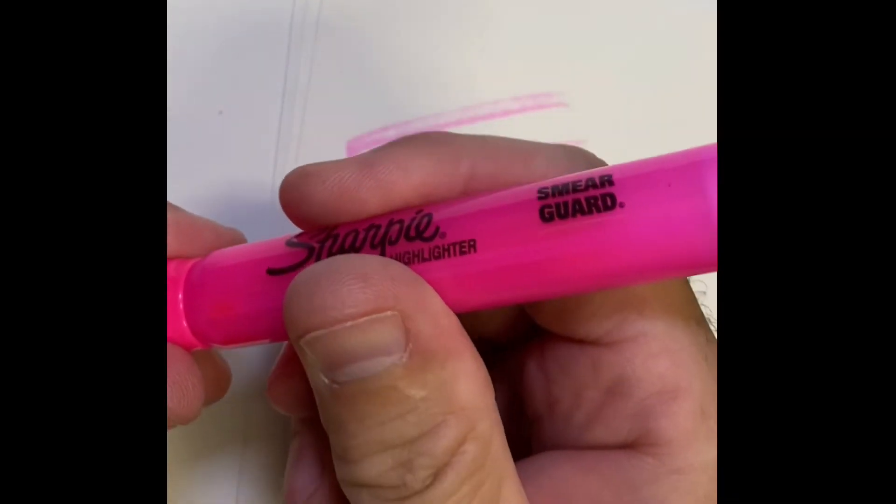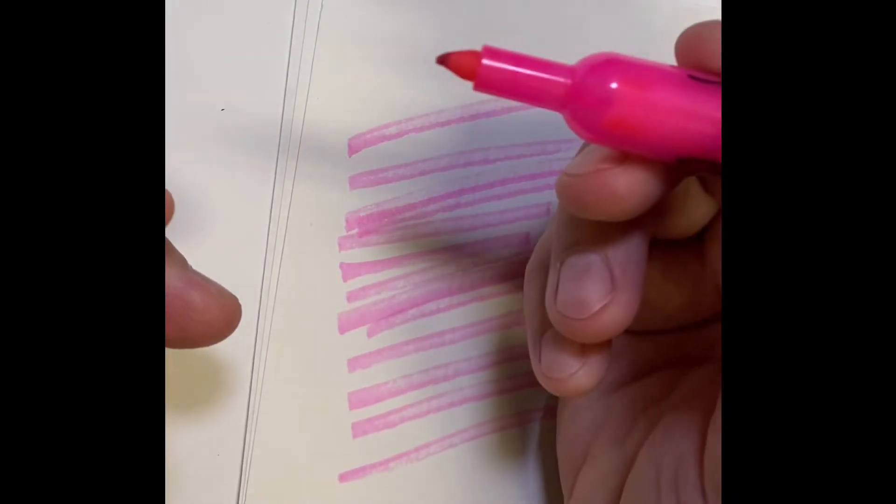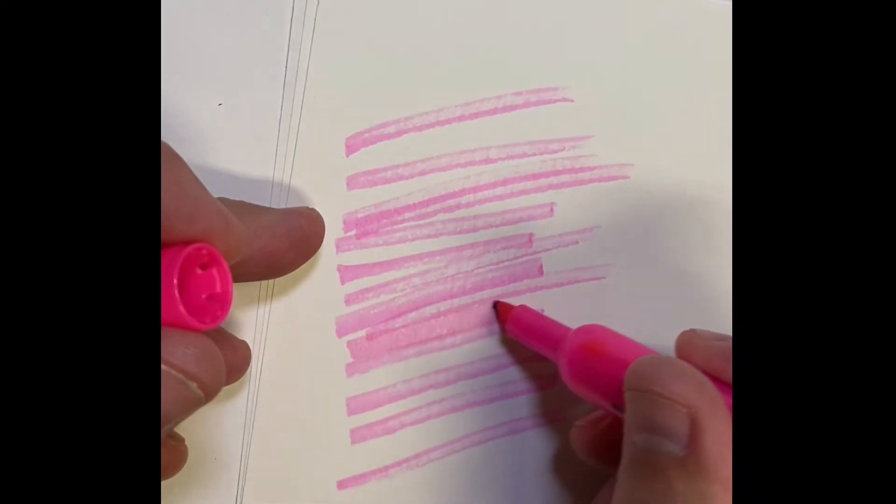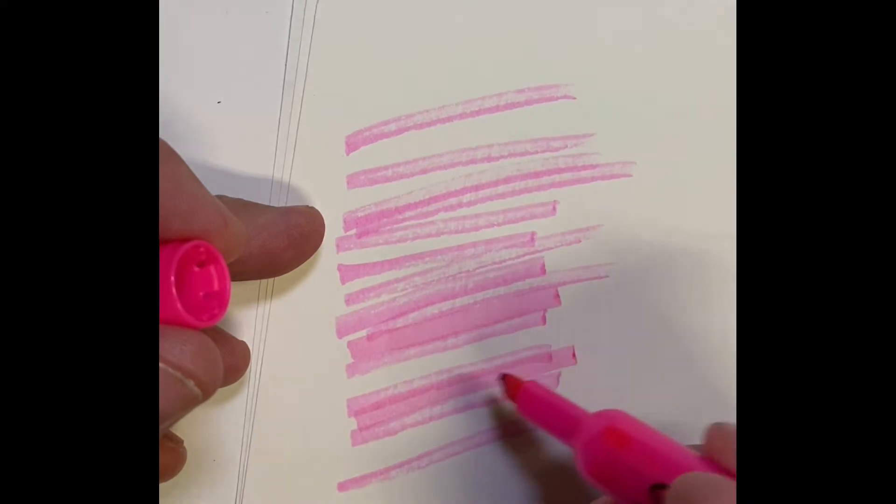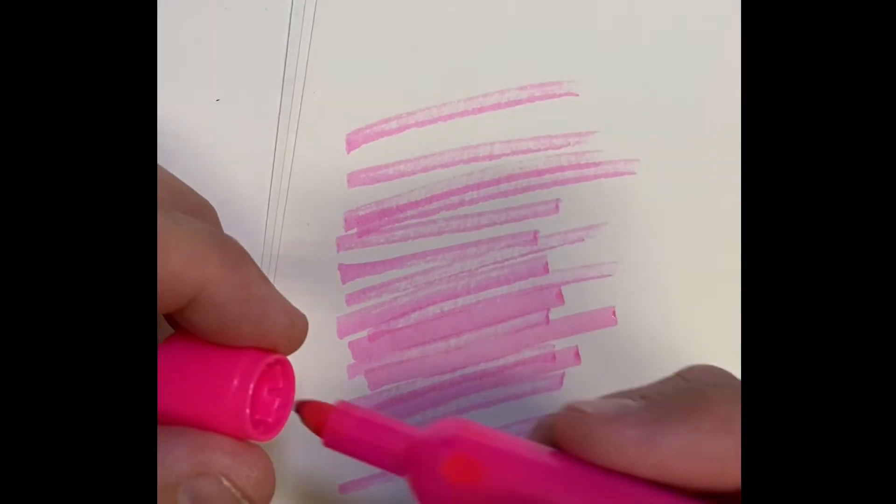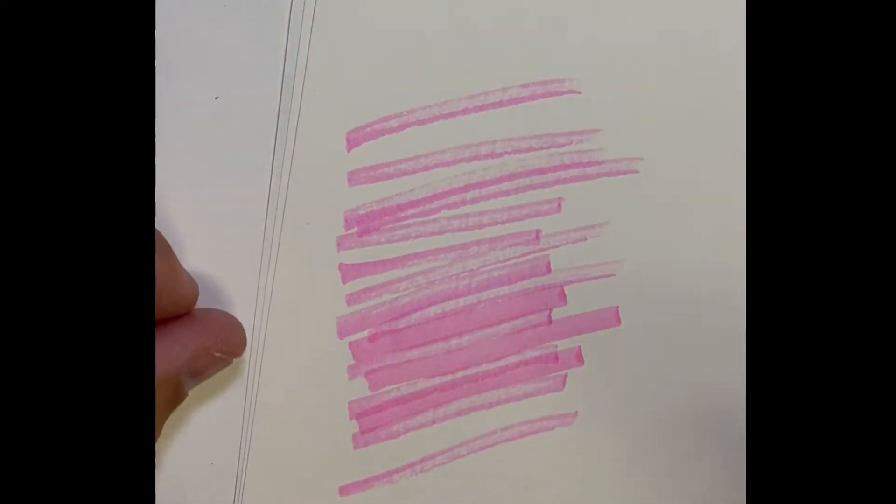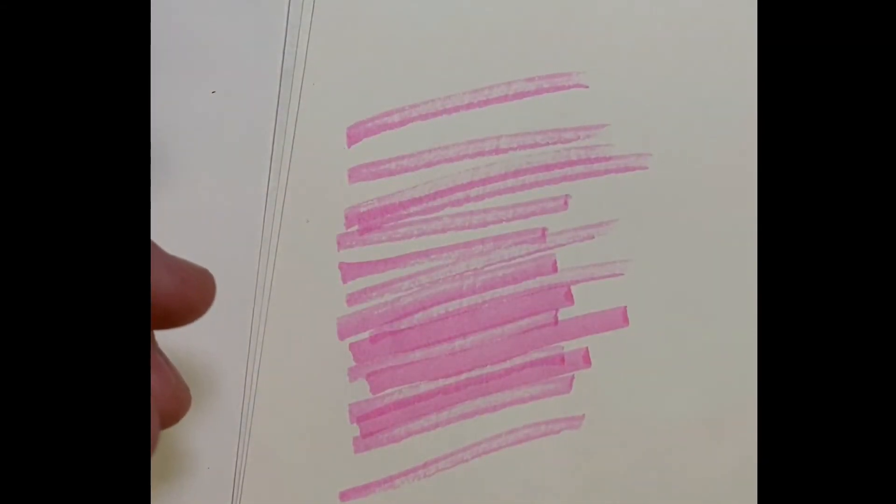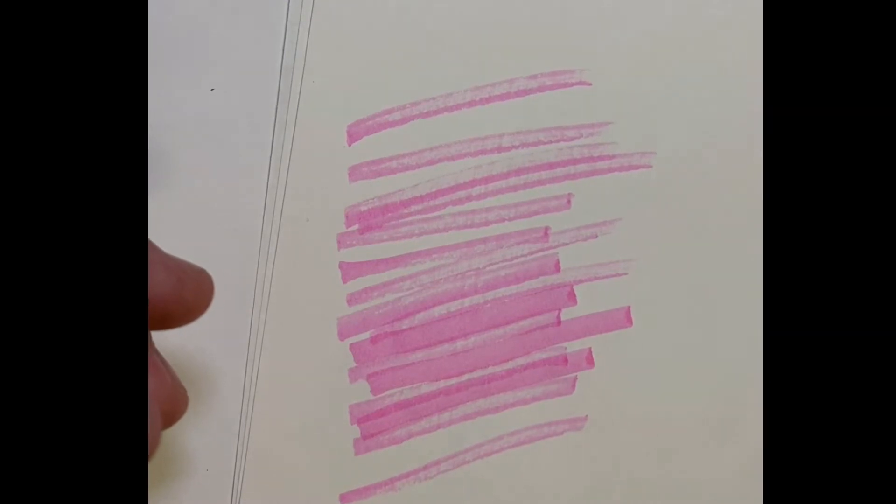All right, we're back with the Sharpie. It was not as far gone as the dry erase marker. So let's see how this is doing. Ooh, look at that. That absolutely has revived. So our highlighter is back with just 20 drops of isopropyl alcohol. It is back in the game.